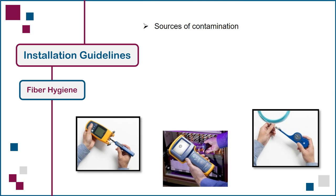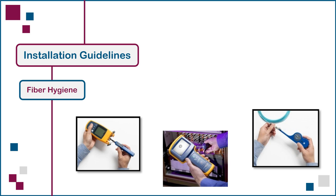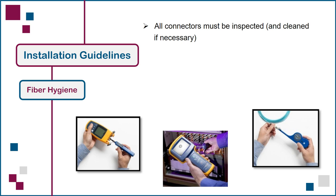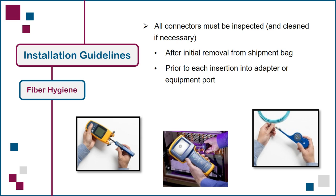Sources of connector end face contamination include airborne particles, particularly outdoors and in harsh environments. Other contaminants come in the form of oil and other residue transferred when handling connections, from lubricants used for pulling cable, and from using too much solvent to clean a connector. Inspection and cleaning should be a routine task for any installer or technician working with fiber connectors. It should not be assumed that a sealed shipment bag contains clean connector end faces. If a connector is removed from a mating adapter or transceiver port, it must be inspected before it's plugged into the same or another adapter or port. It's also essential to inspect after cleaning and prior to connectorization, to confirm that all contamination has been removed and there's no residue remaining from the cleaning process.